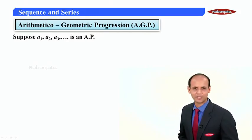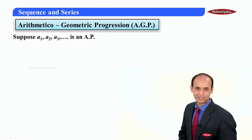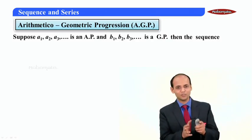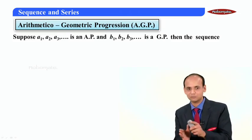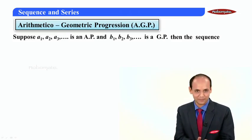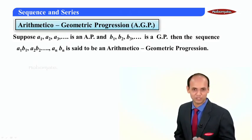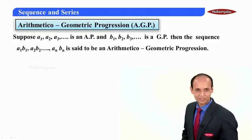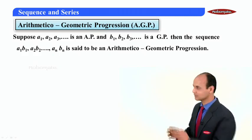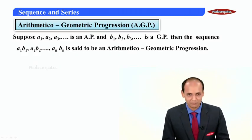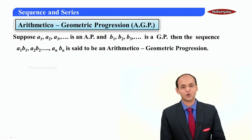Now, friends, let us say I am given an AP and its terms are A1, A2, A3 till An, and a GP whose terms are B1, B2, B3 till Bn. Then we can say the sequence obtained by multiplying the corresponding terms of an AP and a GP — that is A1·B1, A2·B2, and so on till An·Bn — would be called an arithmetic geometric progression.